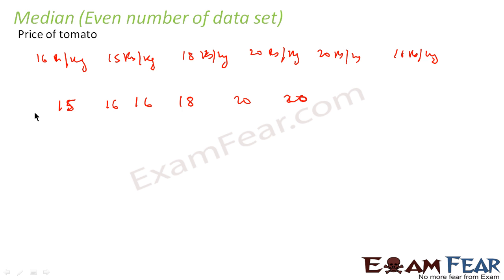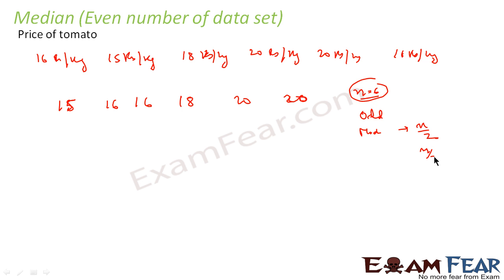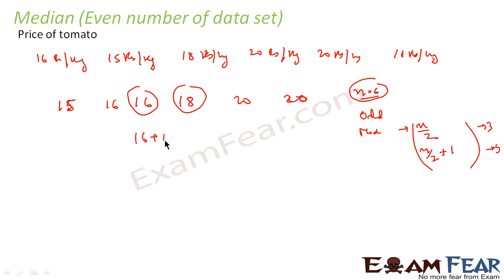Now we find the median. The number of terms is 6, which is even. For even n, we find the n by 2 th term and the n by 2 plus 1 th term, and take their average. For n equals 6, that means the 3rd and 4th terms. The 3rd term is 16 and the 4th is 18, so the median is 16 plus 18 divided by 2, which equals 17. So the median of this data is 17.